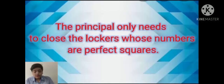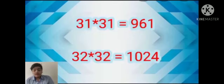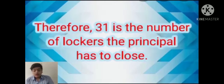You will notice that 4 and 9 are perfect squares. So the principal only needs to close the lockers whose numbers are perfect squares. This means the solution is as easy as finding the square root of the highest possible perfect square within 1000. 31 is the highest perfect square root between 1 and 1000. Therefore, 31 is the number of lockers the principal has to close.